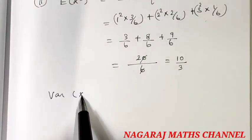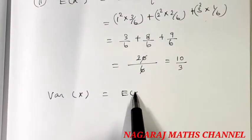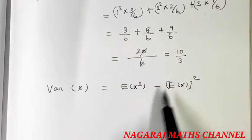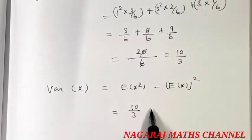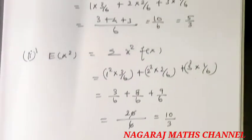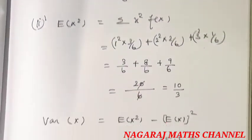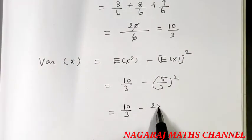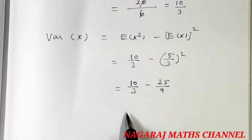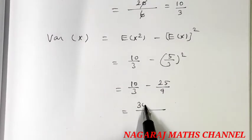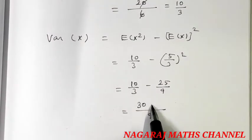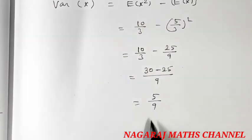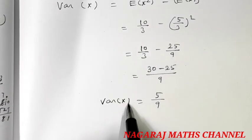Next, the variance. The variance of x. If you can change the variance, E of x square minus E of x the whole square. So this is 10 divided by 3 minus 5 by 3 the whole square. So this is 10 divided by 3 minus 25 divided by 9. So LCM is 9, this is 30 minus 25, which is equal to 5 divided by 9. So this is variance of x.